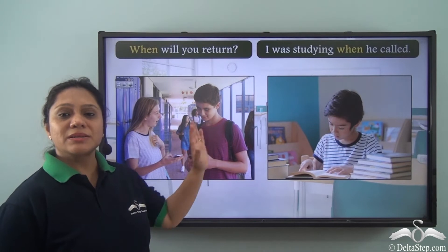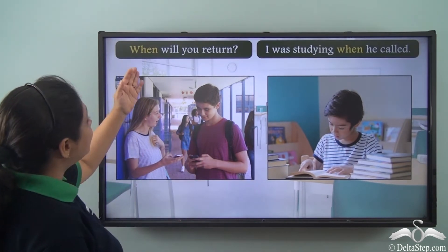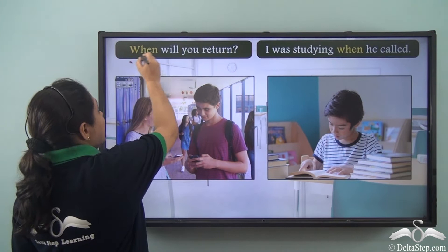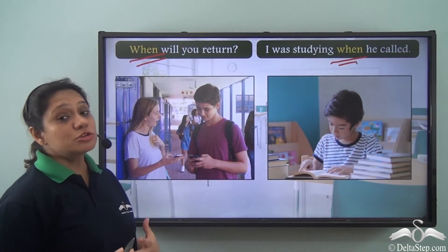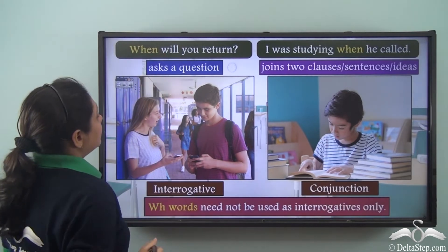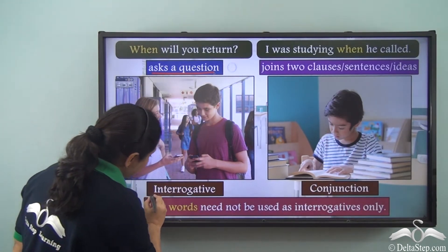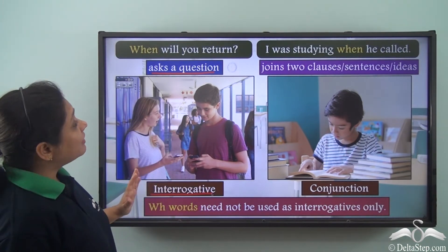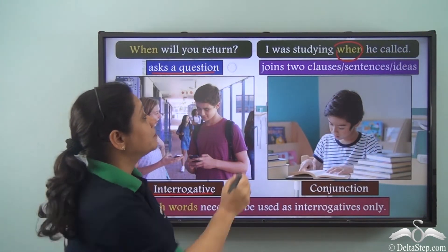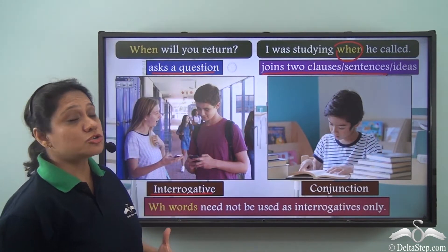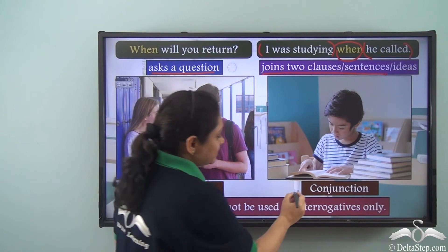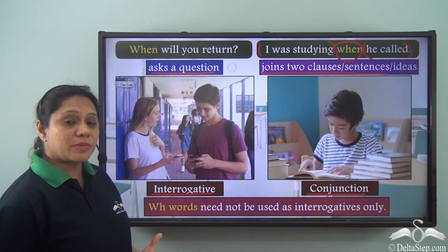Now let us read: 'When will you return?' and 'I was studying when he called.' In both sentences we use 'when', but the usage is different. In the first, 'when' asks a question — it is an interrogative. In the second, 'when' does not ask a question; it joins two clauses — 'I was studying' and 'he called' — so here 'when' has been used as a conjunction.